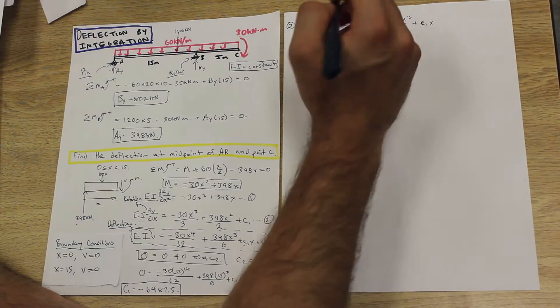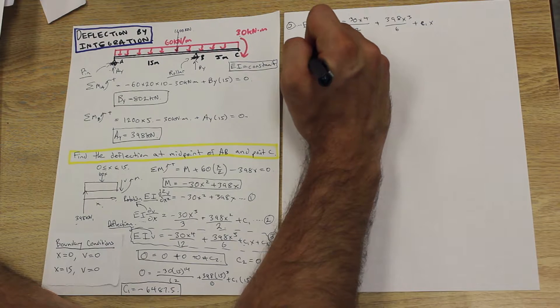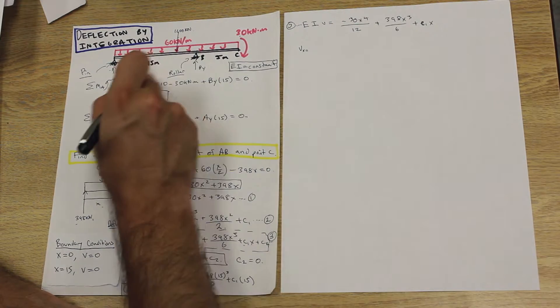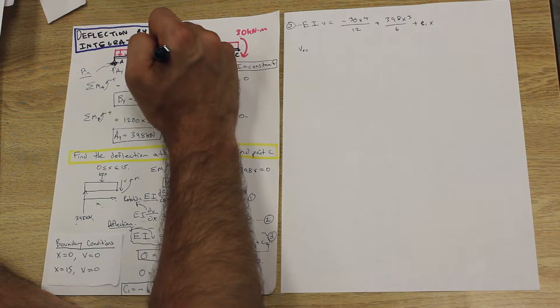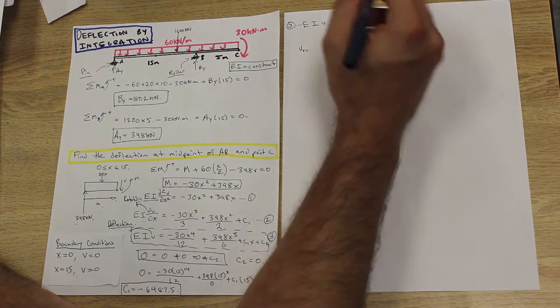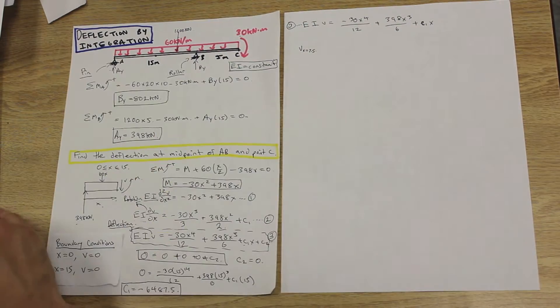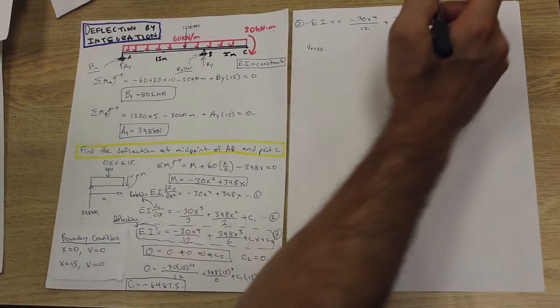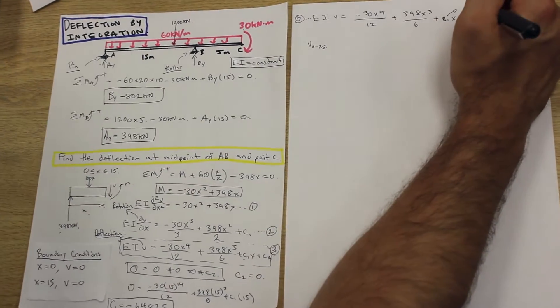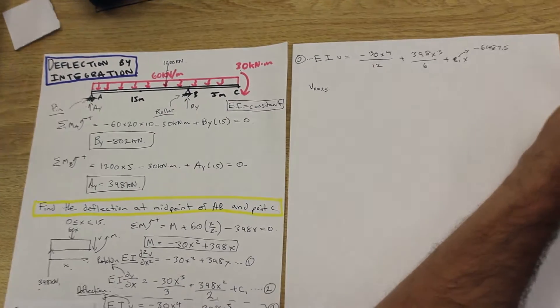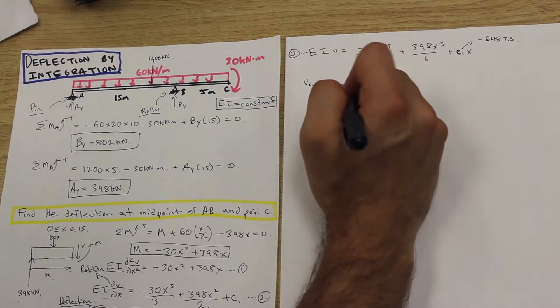So we need to solve for the deflection V at X equals, and half of 15 is 7.5. So we want the deflection here at this point. We're just gonna sub in X equals 7.5. And C1 in this case is negative 6,487.5, because we solved for that. So let's do it.